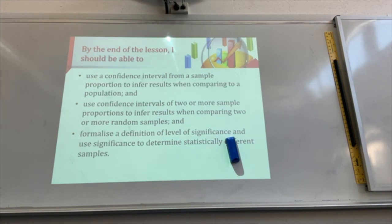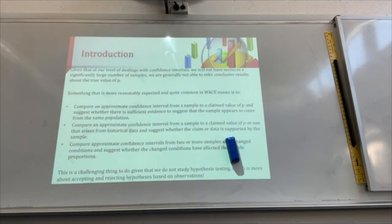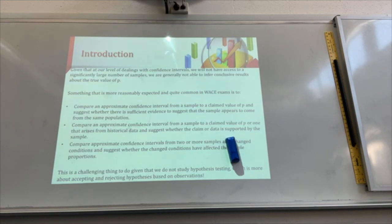There's only one standard way of answering, because P is either inside or outside the interval. In an exam, you are supposed to compare an approximate confidence interval from the sample to a claimed value of P, and suggest whether there's sufficient evidence to suggest that the sample appears to come from the same population. There will be some standard answer to follow.